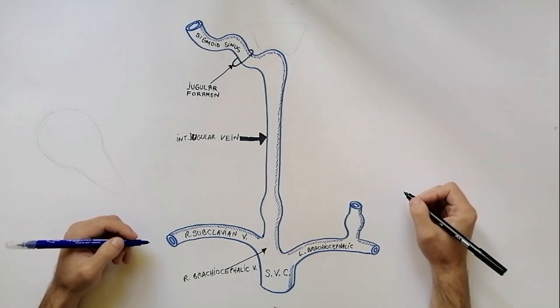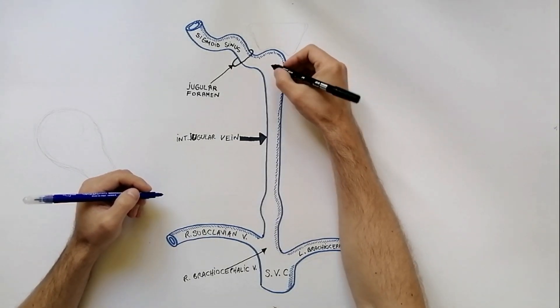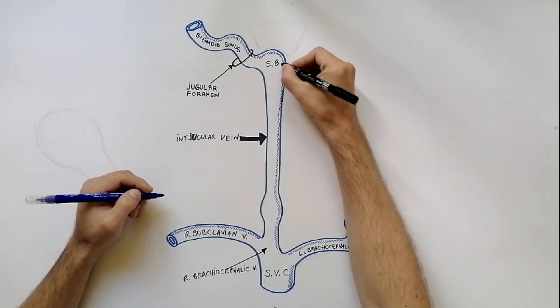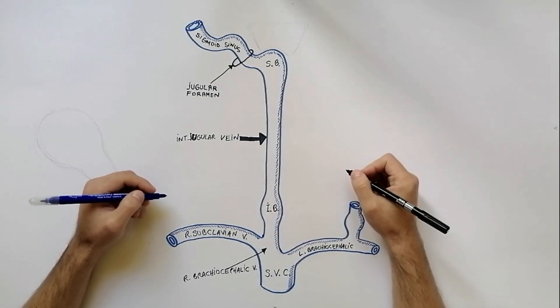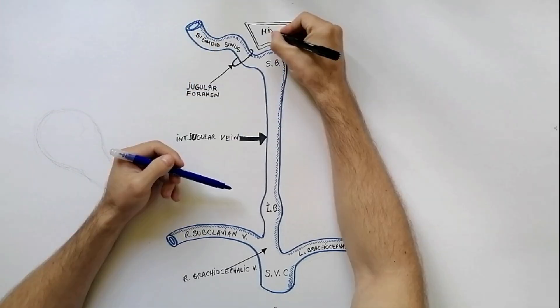The internal jugular vein presents two dilatations. One is just inferior to the jugular foramen and is called the superior bulb, and the other dilatation, the inferior bulb, is just one centimeter above its termination. The superior bulb bulges in the inferior wall of middle ear.